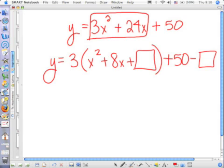Y equals 3x squared. Well, if I distributed here, what would I get? 3x squared plus 24x plus 24x plus 50 plus 50.